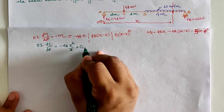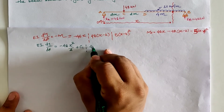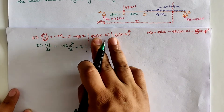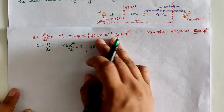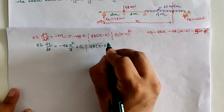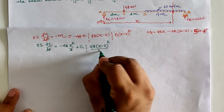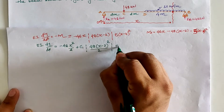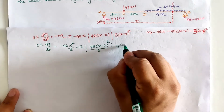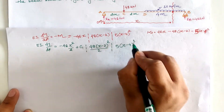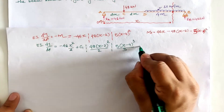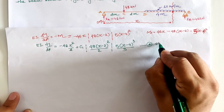Integrating the elastic curve equation gives the slope equation (Equation A) with integration constant C1. According to Macaulay's method, (x minus 2) is treated as one term, so its integration gives (x minus 2) squared divided by 2. Similarly, (x minus 4) squared integrates to (x minus 4) cubed divided by 3.